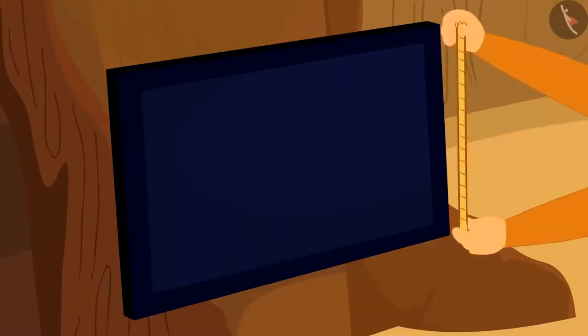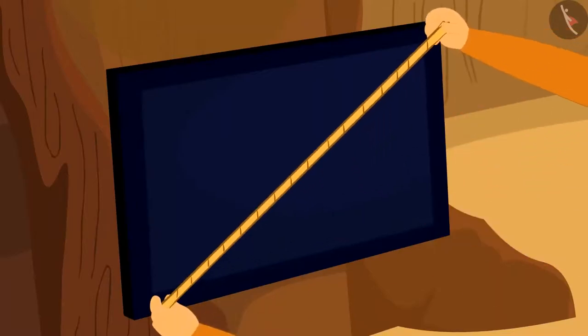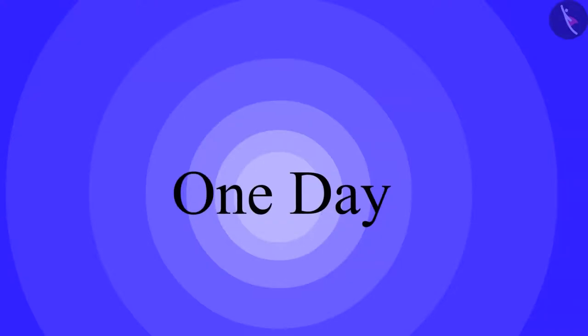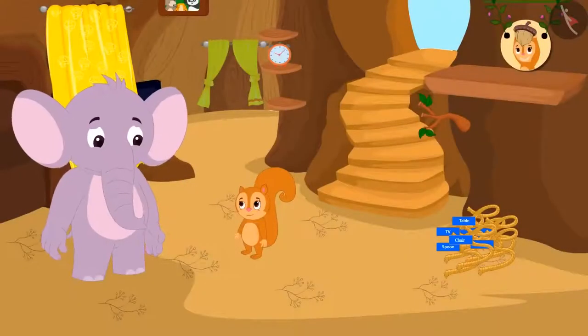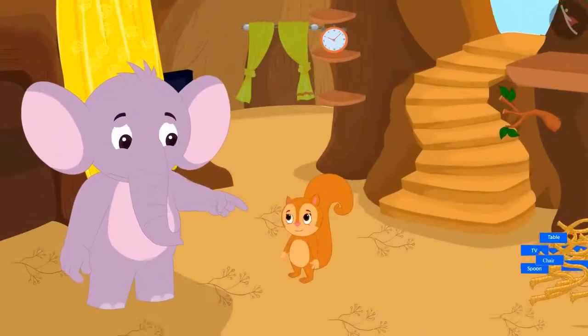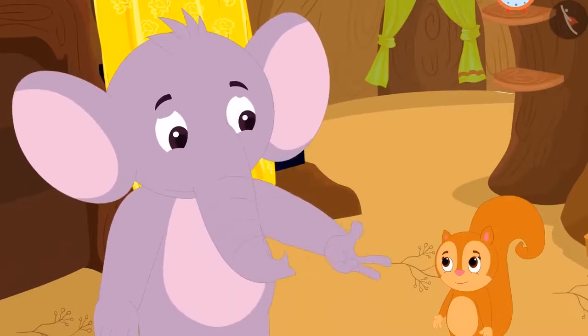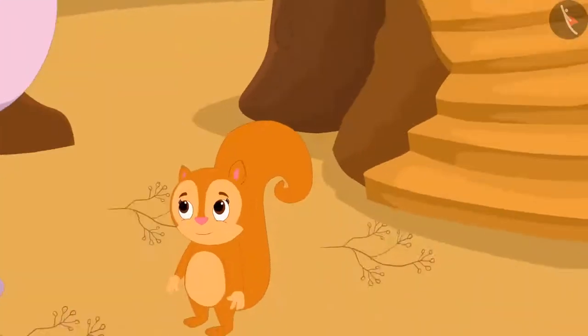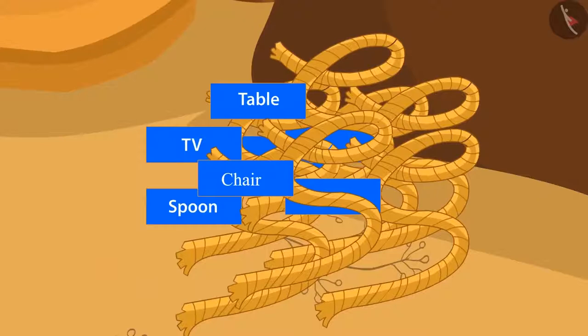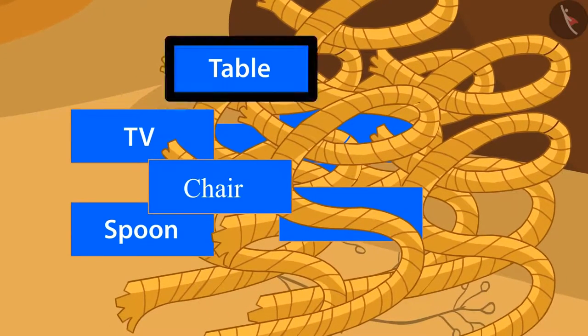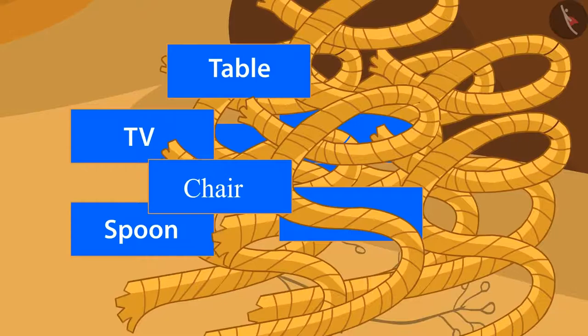She started measuring the length of everything with a rope. One day, when Appu came to her house to eat, he saw that Chanda has made a pile of ropes in the corner of her house. And on every rope, something like the name of TV, table, spoon, etc. was written.